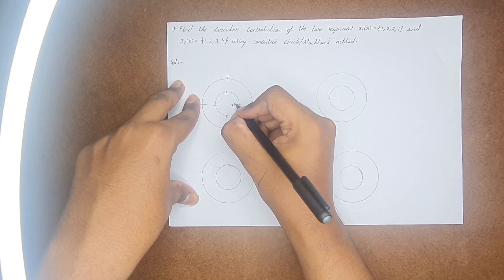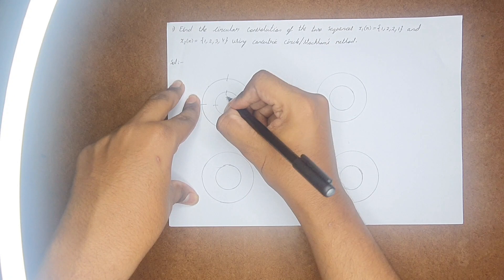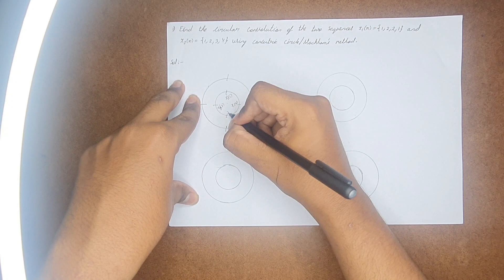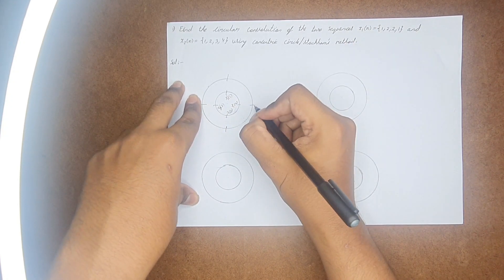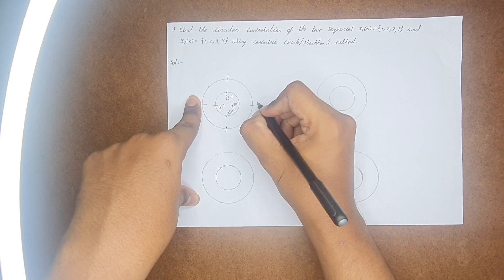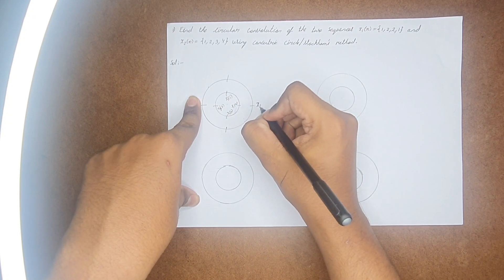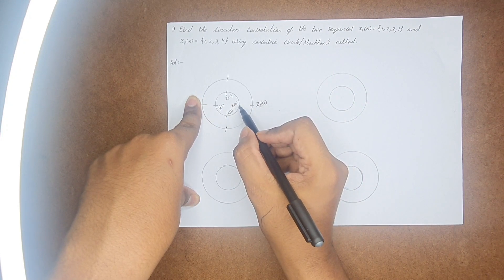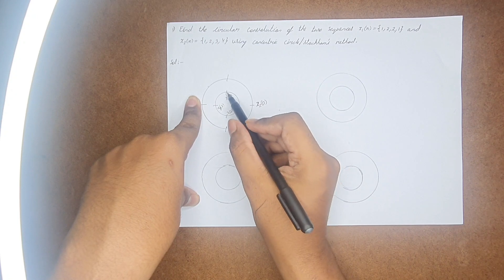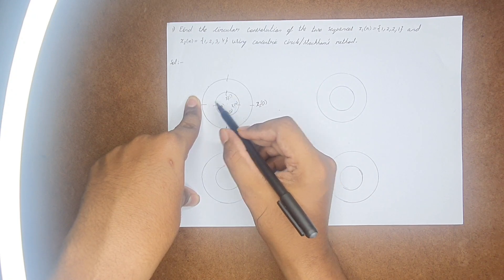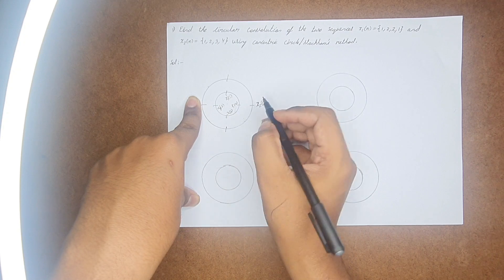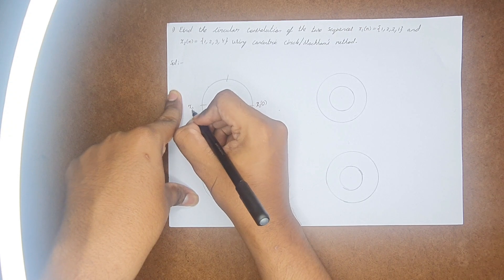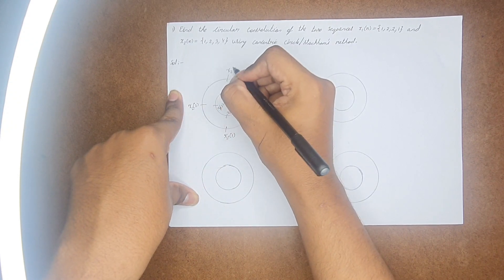Here, this will be x1(0), this is x1(1), this will be x1(2), and this will be x1(3). And the outer circle, you need to fill with x2. Here, it will be x2(0), and in the inner circle, when we are writing the value initially, we are going in this direction. Whereas in the outer circle, you need to go in this direction. So x2(0), here it will be x2(1), here it will be x2(2), and this will be x2(3).